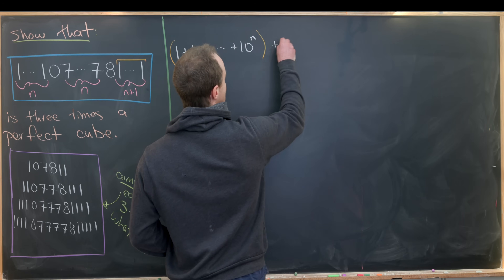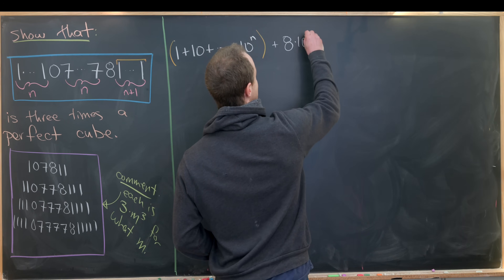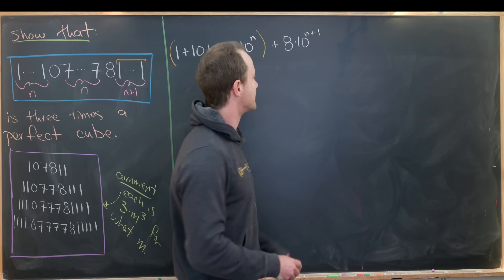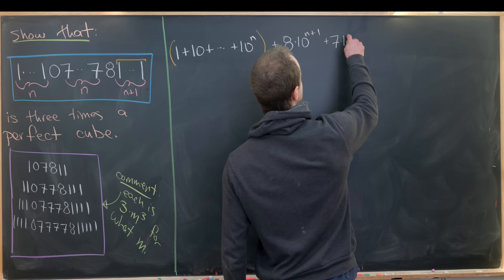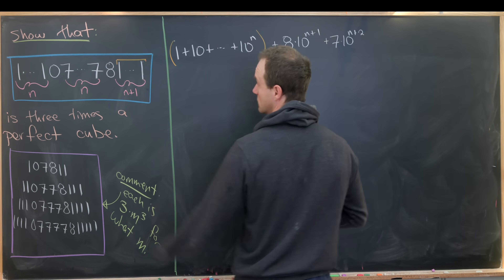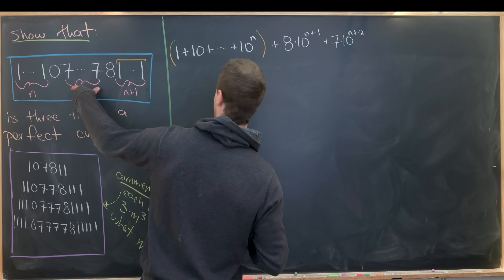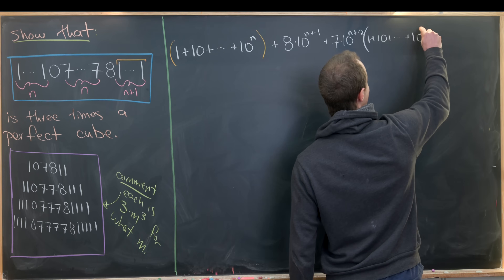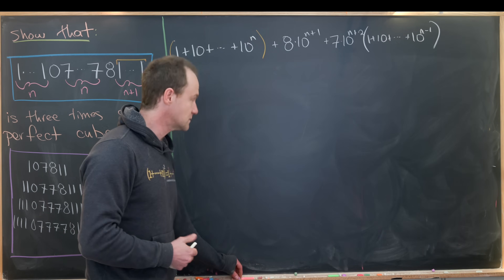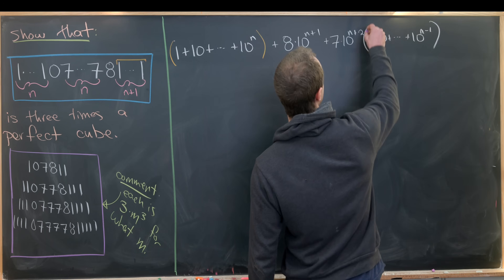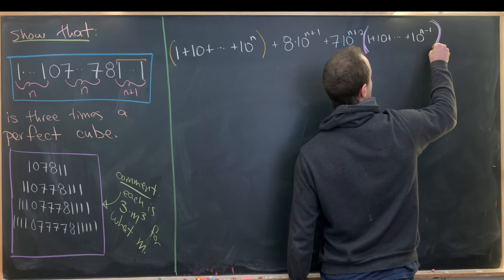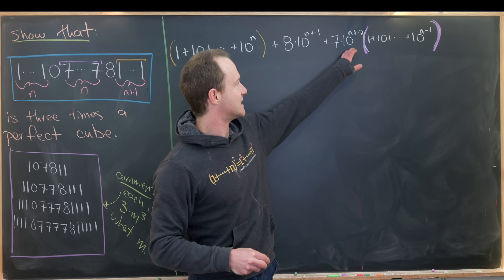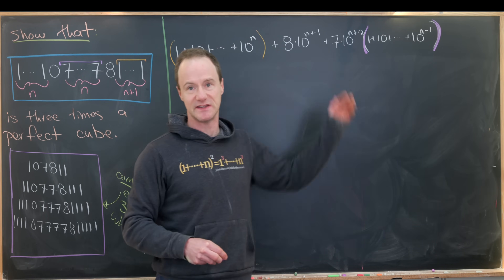That's followed by eight times ten to the n plus one — that's the digit eight by itself. Then we have seven times ten to the n plus two, but we can factor that out of the whole thing and be left with one plus ten plus all the way up to ten to the n minus one. Let's put purple parentheses around this, noting that it exhibits the n sevens digits.